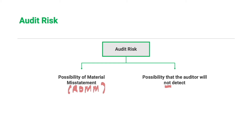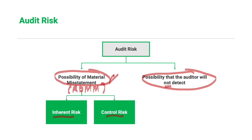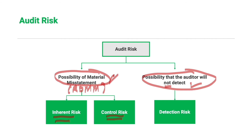Audit risk is a function of two possibilities: that the financial statements are materially misstated, and that the auditor will not detect such misstatement. The risk of material misstatement refers to the likelihood that the financial statements are materially misstated before the auditor performs any procedures. It has two components: inherent risk and control risk. The risk that the auditor will not detect material misstatements is referred to as detection risk.